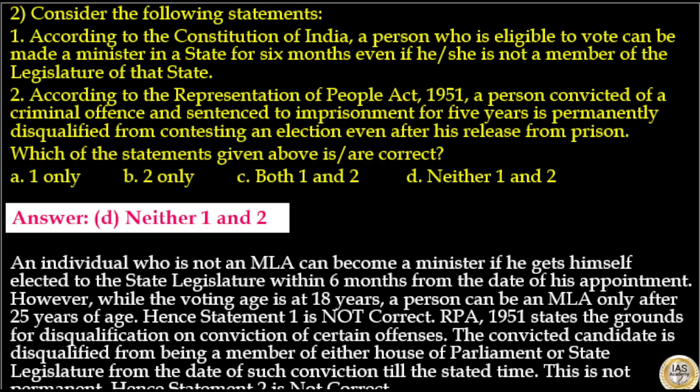An individual who is not an MLA can become a minister if he gets himself elected to the state legislature within 6 months from the date of his appointment. However, while the voting age is 18 years, a person can be an MLA only after 25 years of age. Hence statement 1 is not correct. The Representation of People's Act 1951 states that the convicted candidate is disqualified from being a member of either House of Parliament or state legislature from the date of such conviction — this is not permanent. Hence statement 2 is not correct. The answer is option D.